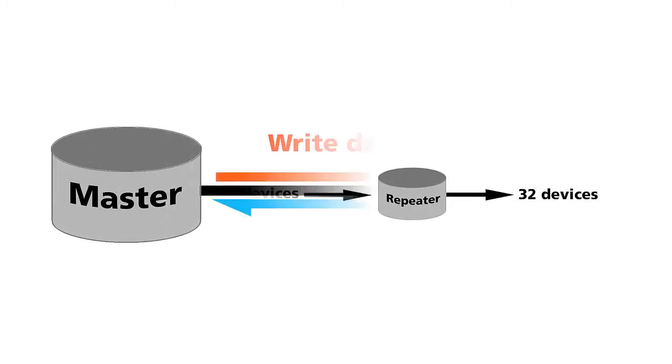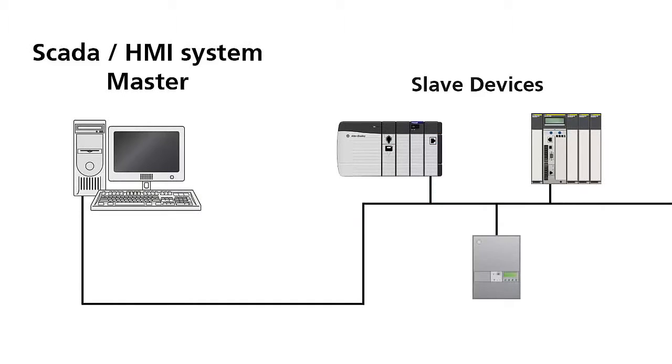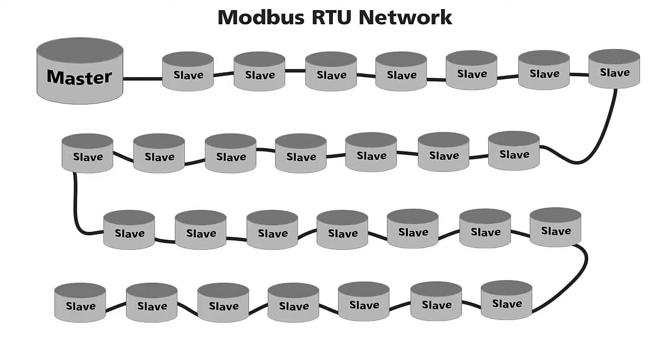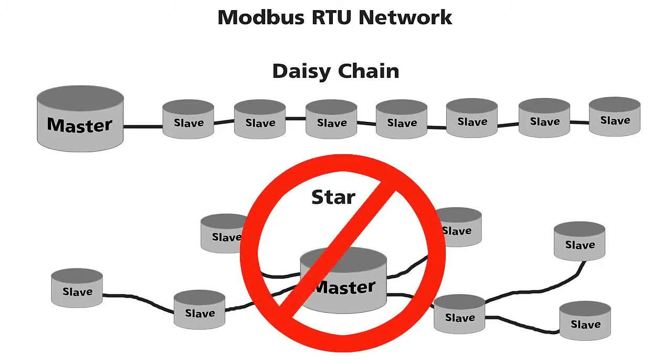The master can write data to the slaves as well as read data from them. SCADA and HMI systems typically would be the master communicating with a series of Modbus slave devices. Here is a diagram of a serial network where the master is connected to a slave which is then daisy-chained along to all the other slaves on the line. The devices must be connected in a daisy-chain manner. They cannot be connected in a star topology.